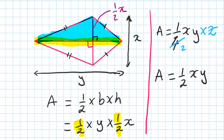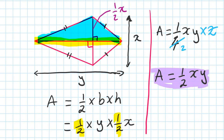So therefore, area of a kite is a half of the two diagonals multiplied together. Please remember this: area of a kite = (1/2) × x × y, which is a half of both diagonals times together.